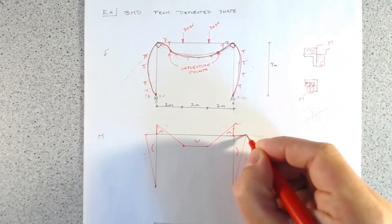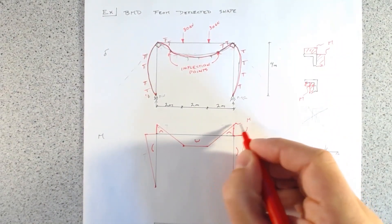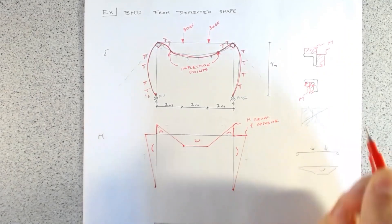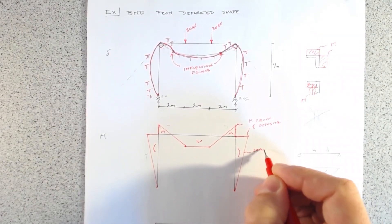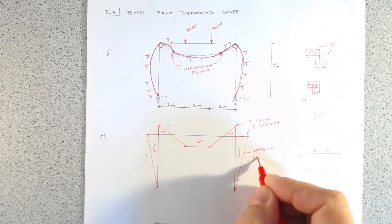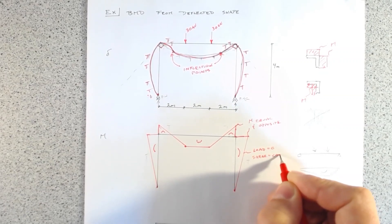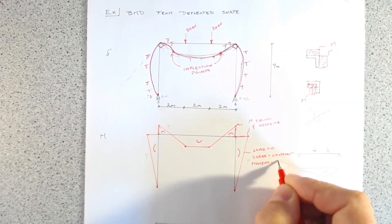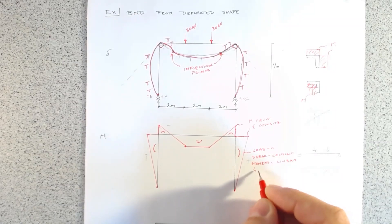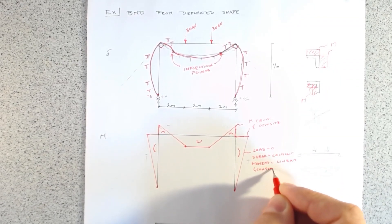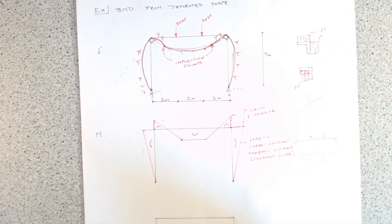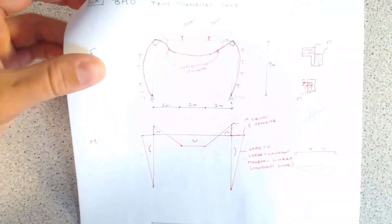Let me label a few key points: moments at the corner are equal and opposite. On the column, load equals zero, so shear is constant and moment is linear — with a constant slope. Remember, if we have the bending moment diagram, we can work out the shear force diagram. So if we have a constant shear in the column, let's draw that in.